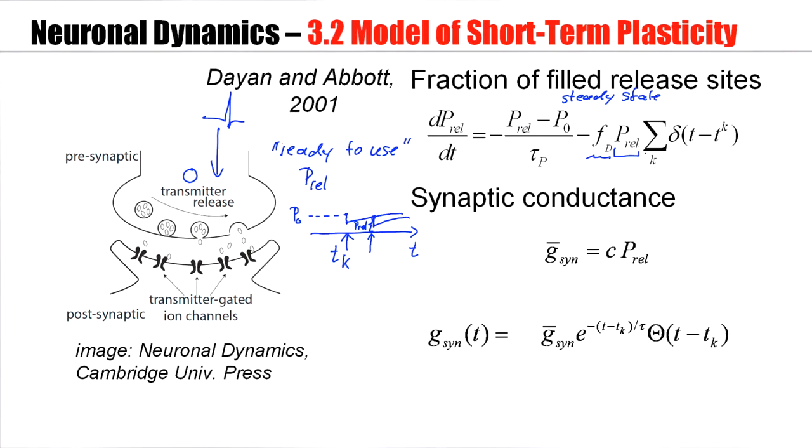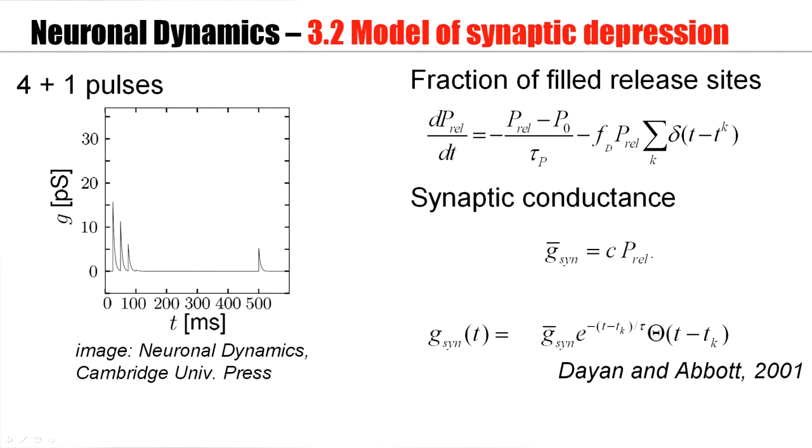Now what's the use of P-rel? Well, the total synaptic conductance will be determined by the amount of neurotransmitter that can be captured. But if less neurotransmitter is spilled out, less neurotransmitter is around. So the total synaptic conductance is limited by this factor P-rel. And in a simple model of the synaptic conductance, we would just have an exponential pulse that's controlled by the amount of neurotransmitter that's around. So let's see how this model works.